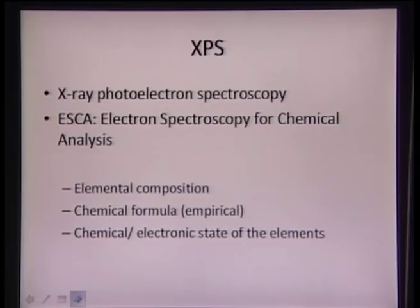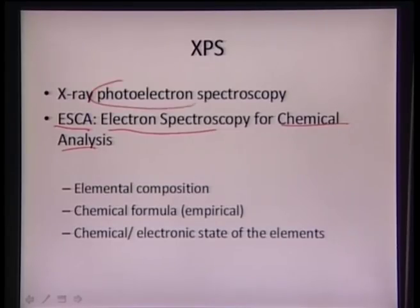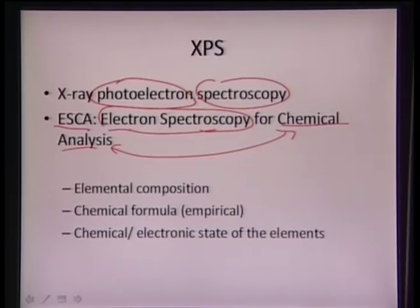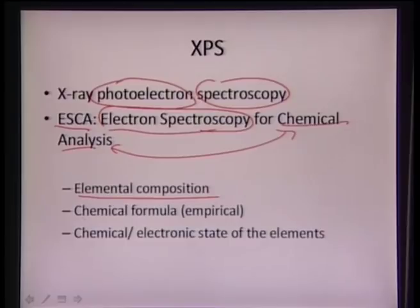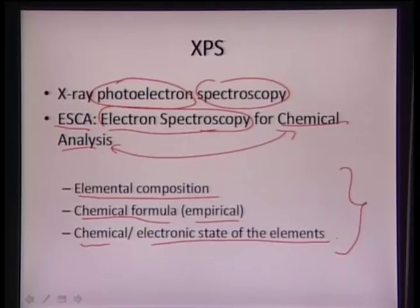XPS is also called ESCA — electron spectroscopy for chemical analysis. We utilize X-ray to excite a particular material, generate photoelectrons, and get a spectrum for chemical analysis. It is called electron spectroscopy because the electron emitted as a photoelectron is captured for chemical analysis. Via XPS we can analyze elemental composition, determine an empirical chemical formula, and also determine the chemical or electronic state of the elements — because XPS is highly dependent on the electronic state of the element.